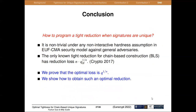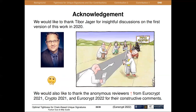Conclusion. How to program a tight reduction when signatures are unique is non-trivial under any non-interactive hardness assumption in the standard security model against general adversaries. Currently, the only known tight reduction for chain-based construction has reduction loss n times q^(1/n). We prove that the optimal loss is actually q^(1/n), and we show how to obtain such an optimal reduction with a completely different approach. We would like to thank Tibor Jager for insightful discussion on the first version of this work in 2020, and we would also like to thank the anonymous reviewers from Eurocrypt 2021, Eurocrypt 2022, and Crypto 2021 for their very important and useful comments. Thank you.